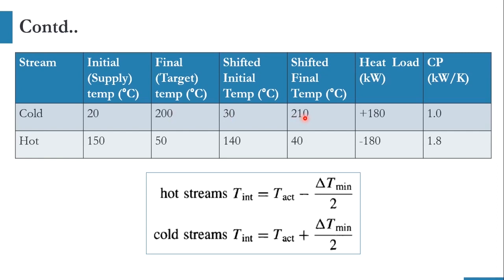We now have four shifted temperature values: 210, 140, 40, and 30. From 30 to 210, we have the cold stream; from 140 to 40, we have the hot stream in the shifted temperature approach. We plot three temperature intervals: 210 to 140, 140 to 40, and 40 to 30°C.